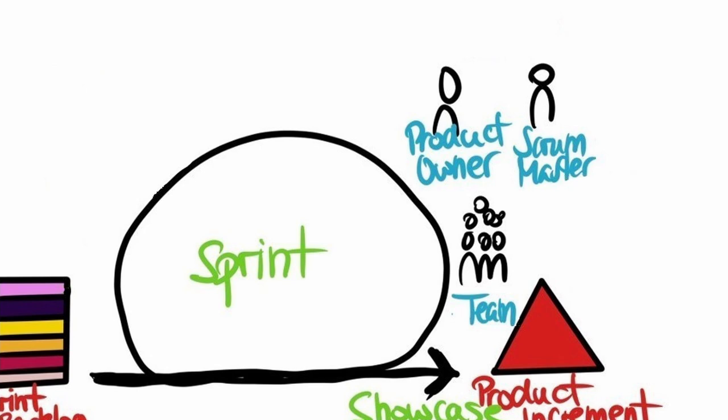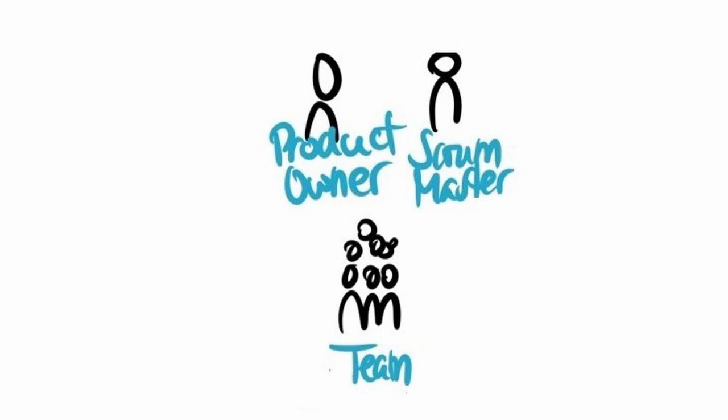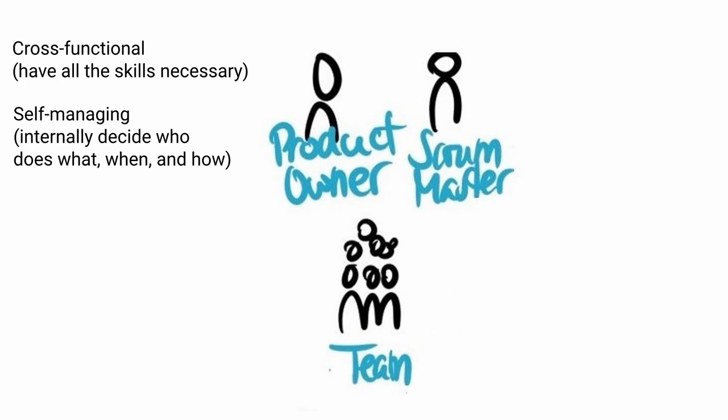Scrum roles. Within Scrum the fundamental unit is the team or squad. There are only three roles within a Scrum team: a Scrum Master, a product owner, and the team members. No hierarchies or complex structures. Scrum teams are cross-functional, meaning the members have all the skills necessary to create value each sprint. They are also self-managing, meaning they internally decide who does what, when and how. The Scrum team should be small enough to remain nimble but large enough to complete significant work within a sprint — typically ten or fewer people.